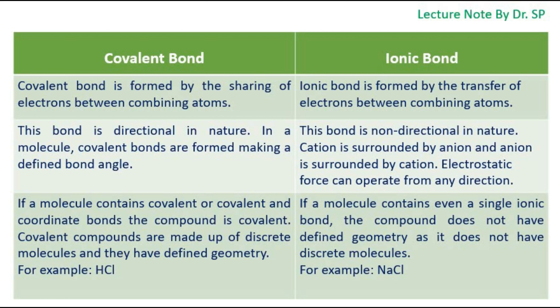If a molecule contains covalent or covalent and coordinate bonds, the compound is covalent. Covalent compounds are made up of discrete molecules and they have defined geometry. For example, the bond of hydrochloric acid — the bond between hydrogen and chlorine is a covalent bond.